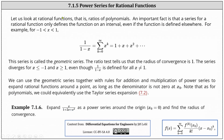And now let's take a look at rational functions, which are ratios of polynomials. An important fact is that a series for a rational function only defines the function on an interval, even if the function is defined elsewhere. For example, below we have the geometric power series, which converges to the function 1 divided by the quantity 1 minus x only on the open interval from negative 1 to 1. The ratio test tells us the radius of convergence is 1; the series diverges for x less than or equal to negative 1 and x greater than or equal to 1, even though the function 1 divided by the quantity 1 minus x is defined for all x not equal to 1.